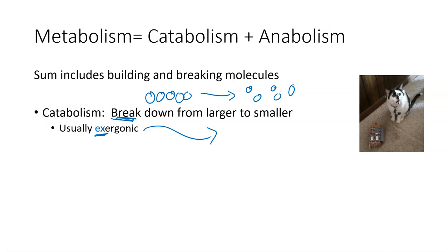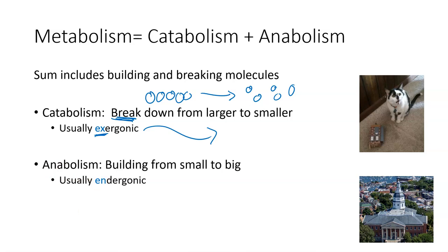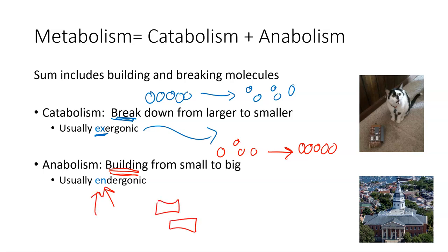The second term is anabolism. Anabolism is where we start building something — creating or making something from small to big. Whenever this happens, energy usually has to enter. Imagine if you wanted to build a house from individual bricks — you need to put in a lot of energy before you can build a big house. Anabolism is any time we have to build something. A mnemonic: Annapolis has a lot of buildings — anabolism = building.